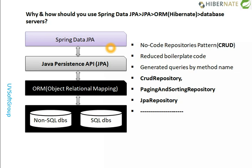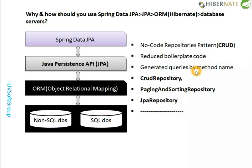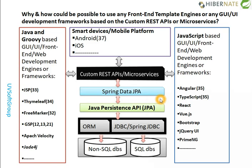You see the no-code repository pattern for CRUD operations — simply use the existing CrudRepository, PagingAndSortingRepository, or JpaRepository. For CRUD operations you don't need to do anything — just define your entity model with the respective CRUD repositories and you get everything. Boilerplate code is generated automatically, and queries are generated by method name. I will show you the details when I start the development.